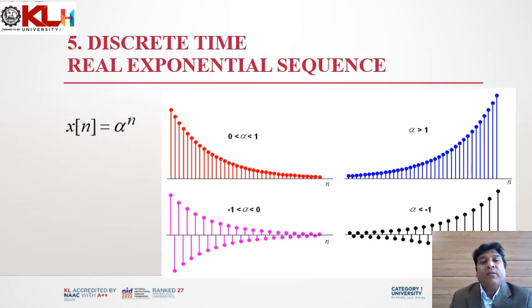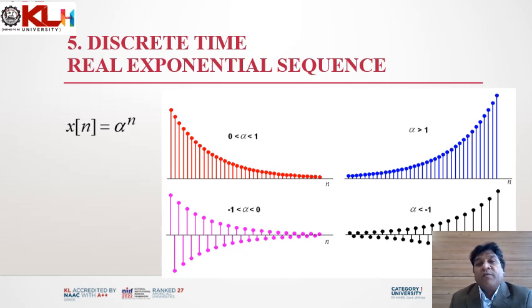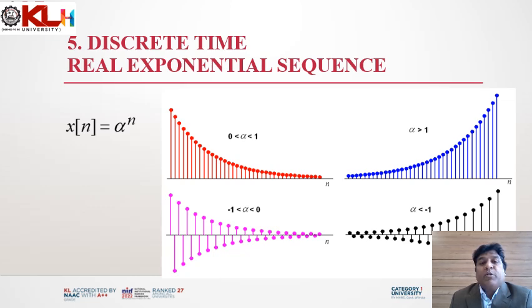Now we are going to discuss the fifth topic, which is discrete time real exponential sequence, written as α^n, where n is the discrete time variable. We can see four different scenarios in the four graphs on this slide. If α is between 0 and 1, we get a decaying exponential. If α > 1, we get a growing exponential. If α is between -1 and 0, we get a decaying exponential with alternating positive and negative sign. If α < -1, we get a growing exponential with alternating positive and negative sign.